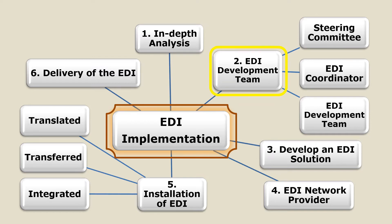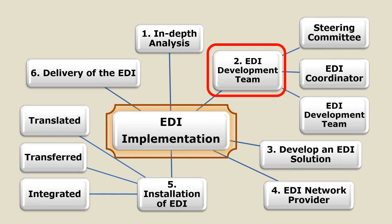Once the business organization is satisfied with the outcomes of the in-depth analysis, they constitute an EDI development team. This EDI development team consists of three components: a steering committee, an EDI coordinator, and an EDI development team. In the steering committee, the heads of different departments or different business partners of the organization will be part of it.